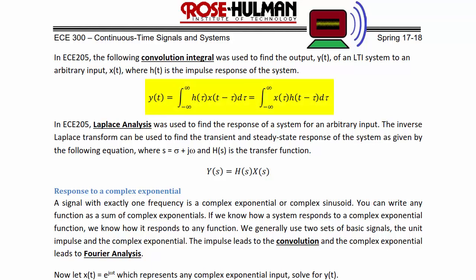Using the impulse as our basic signal, y(t) = ∫_{-∞}^{∞} h(τ) x(t−τ) dτ, or equivalently ∫_{-∞}^{∞} x(τ) h(t−τ) dτ. As long as we can find the impulse response h(t), we can find the response of the system to any arbitrary input. In EC205 we also did Laplace analysis, where the inverse Laplace transform is used to find the transient and steady-state response, with Y(s) = H(s) X(s), where s = σ + jω and H(s) is the transfer function directly related to the impulse response.